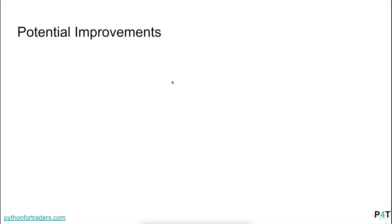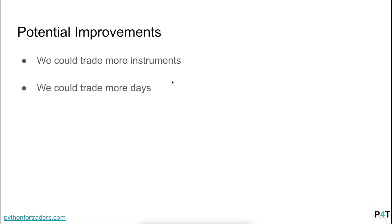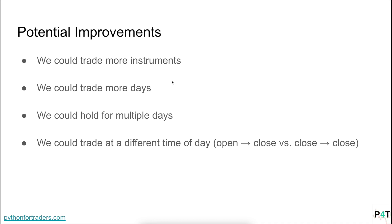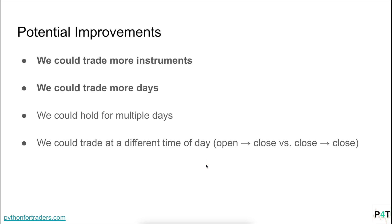Let's discuss ways to potentially improve it. First, we could trade more instruments than just one. We could also incorporate more trading days. We could also use a different holding period — instead of just one day, we could do two, three, or four days after payday. Another option is to trade at different times of day — for example, from close to close instead of open to close. These are all different ways to tweak the strategy and then run another backtest. The two I'm going to look at now are trading more instruments and including more trading days.